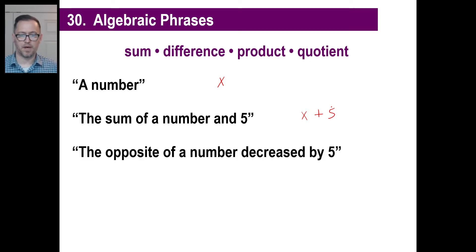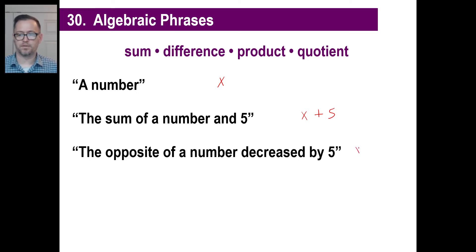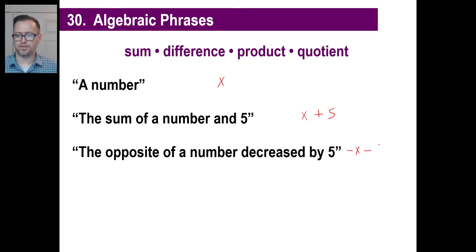How about 'the opposite of a number decreased by five'? If X is a number, then the opposite of a number is negative X. If it's decreased by five, that means we're subtracting five from it. So we write negative X minus 5.